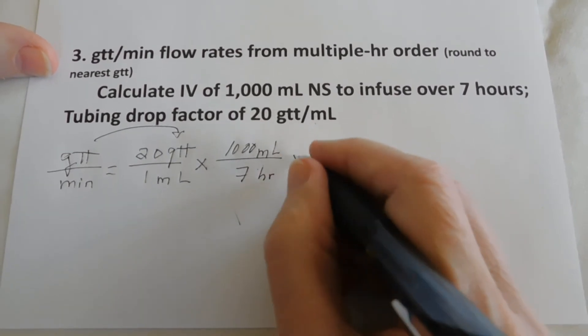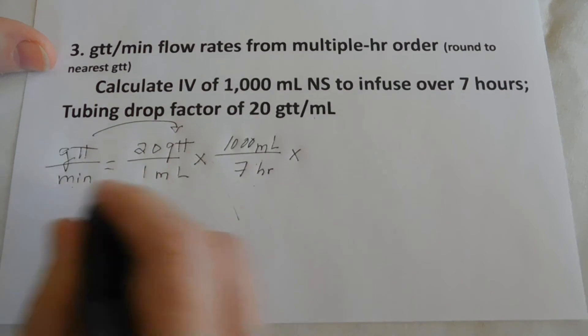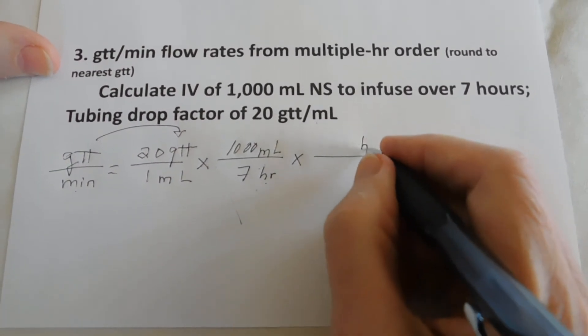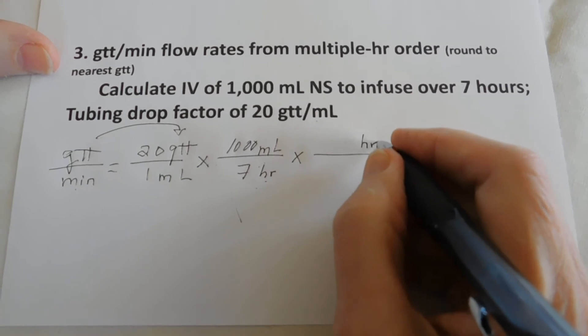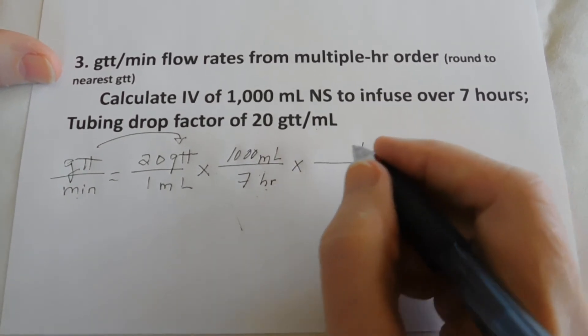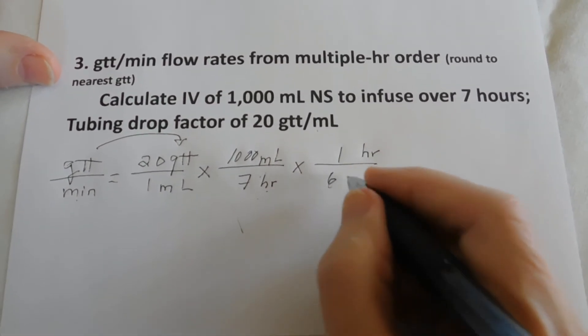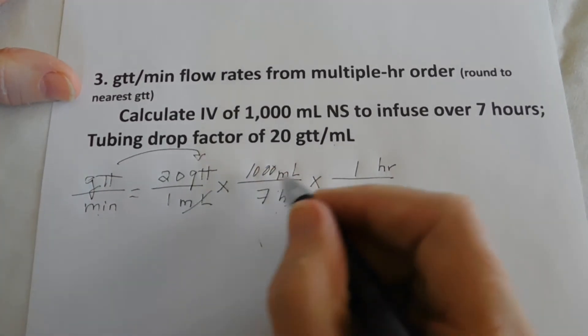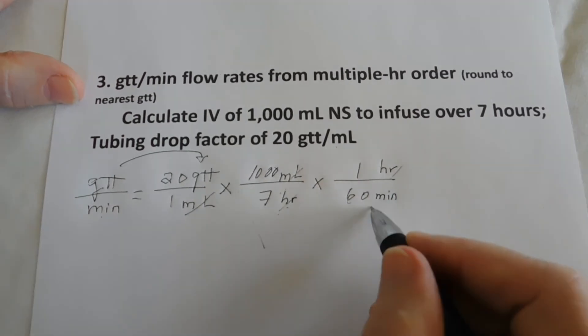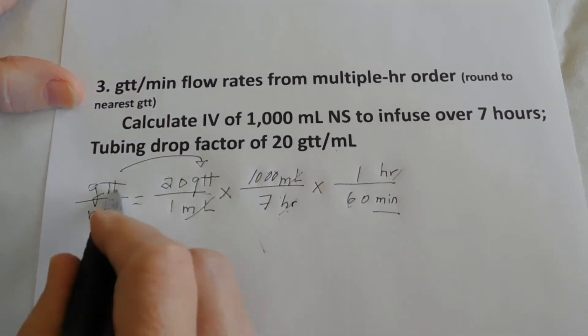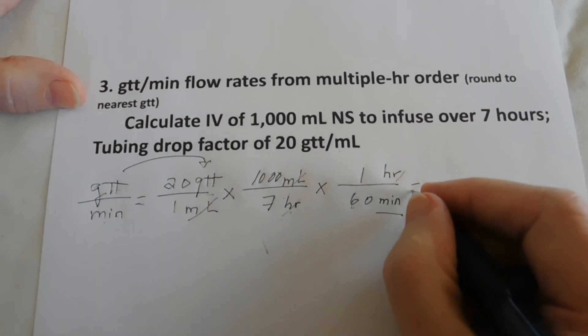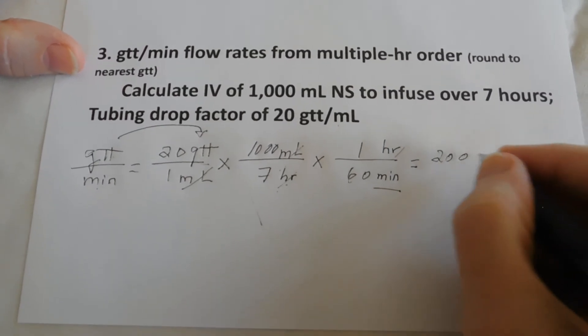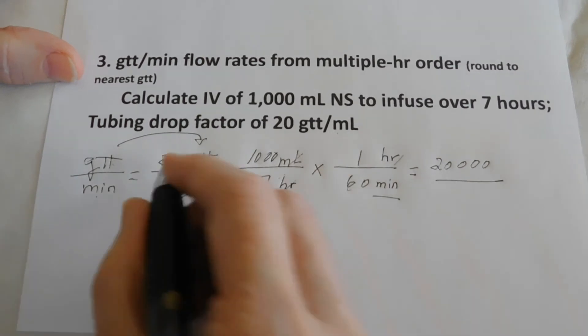We're not ready yet because we need minutes, don't we? Okay, so hours climbs the hill. And now we have a conversion factor with 1 hour is 60 minutes. Are we ready? We can cancel here, cancel here. We end up with minutes and drops, which is our unit of measure. And we have 20,000 as we multiply the numerators together.